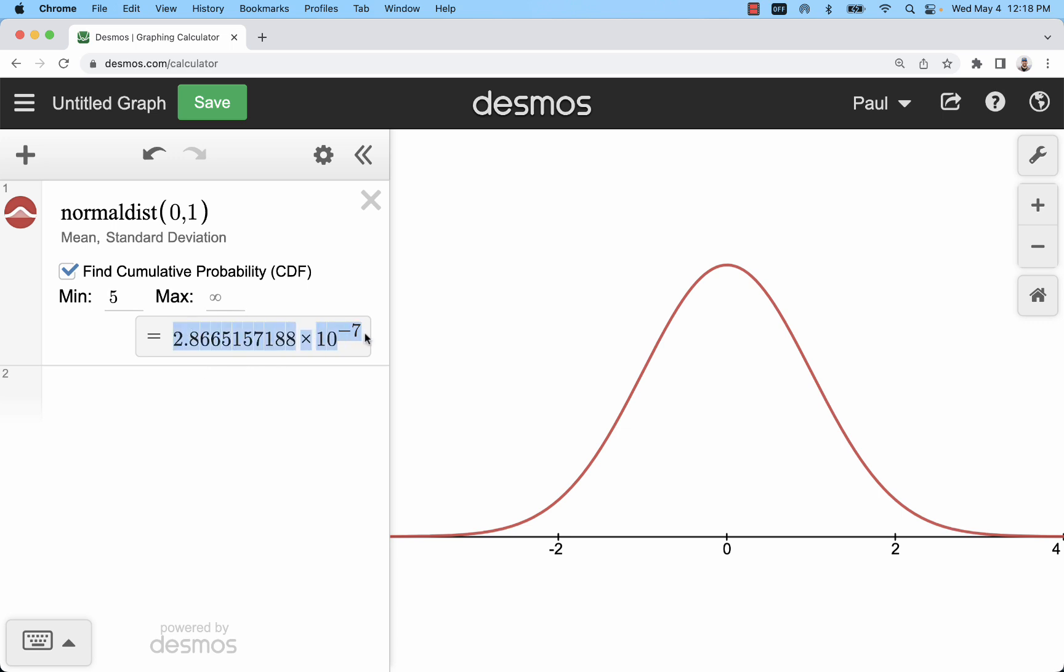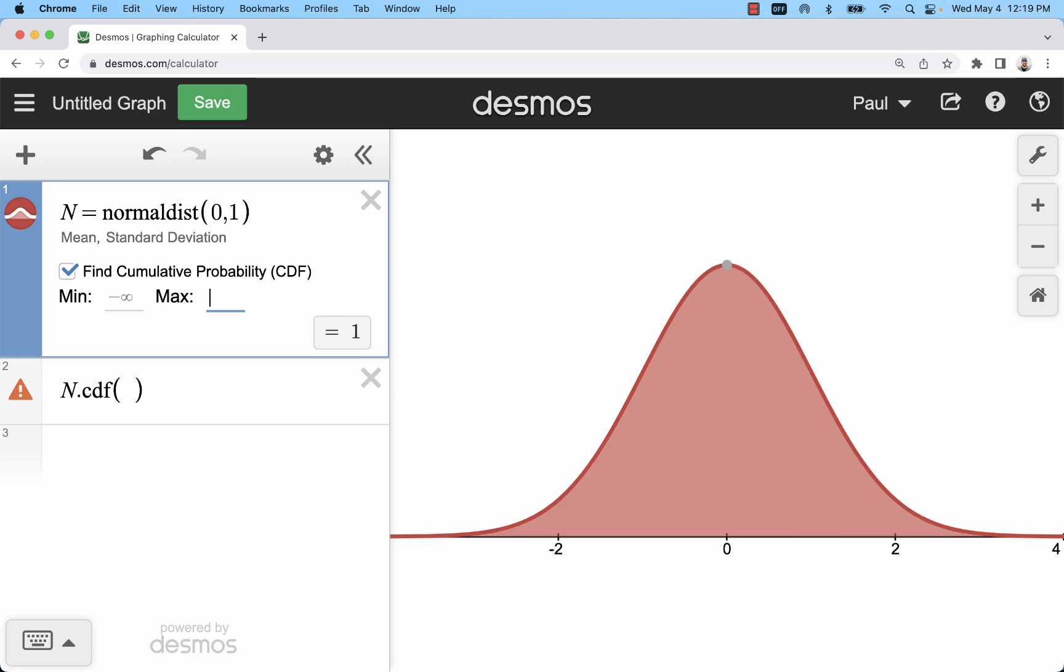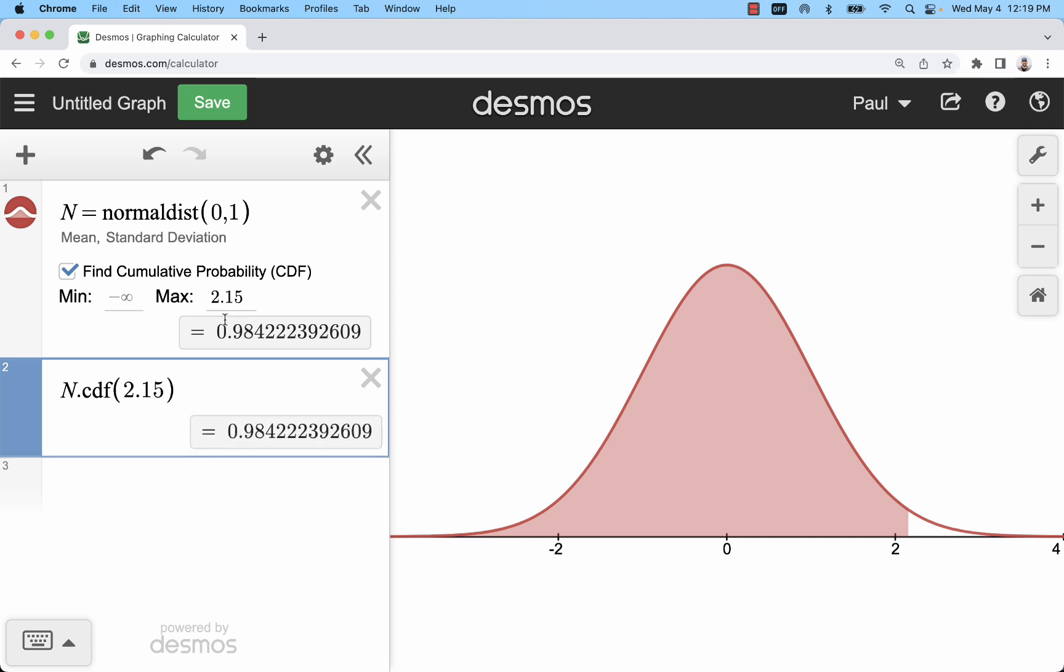Now if I want to use this value I will need to label this, for example N equals, and then use that N.cdf function. Now if I put one value it's going to find the cumulative area to the left. So let me test this out. Let me put in a maximum value here of 2.15 and then here I'm shading to the left of 2.15 and it matches.